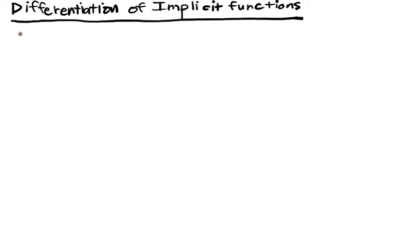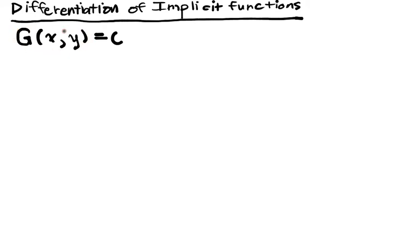We want to know when we can get an implicit function, and the first thing we're going to do is show that there's a necessary condition for an implicit function. By our definition, an implicit function has to be well-defined in a region around some point. The first implicit functions we'll think about are g(x, y) = c, where g is some nice differentiable function — it's differentiable, it has partials, so dg/dx and dg/dy exist and are continuous.